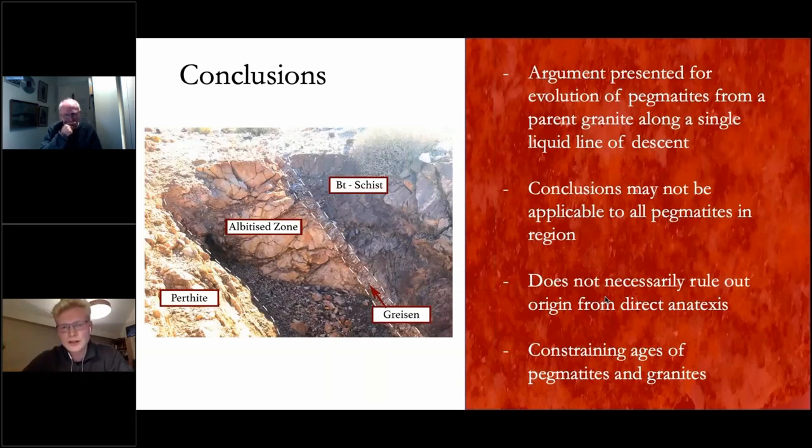One way that we could really put the nail in the coffin with this hypothesis is by dating the pegmatites and the granites themselves. If they were a very similar age, you could basically conclude that they were the same generation, whereas if you found that they were, say, 25 million years apart, they're obviously not from the same generation. I actually had a few samples that were on their way to the University of the Witwatersrand in South Africa to go and get dated, and they got lost in transit. So I'm kicking myself here, but if we were to go back, that was one way we could really test this hypothesis.